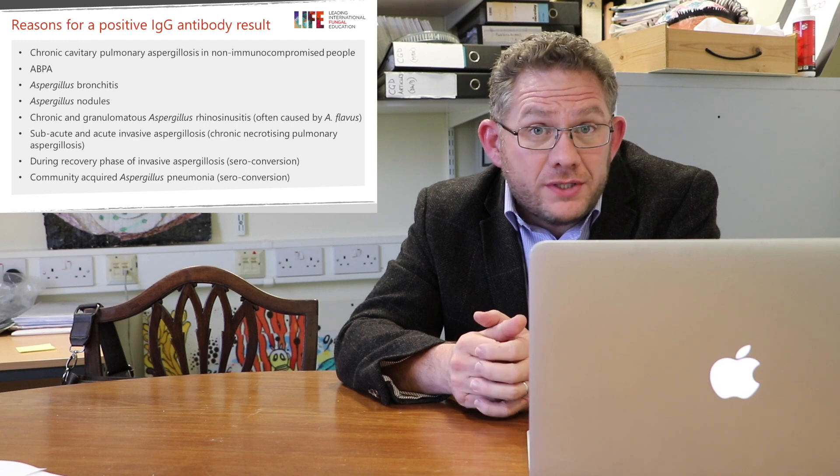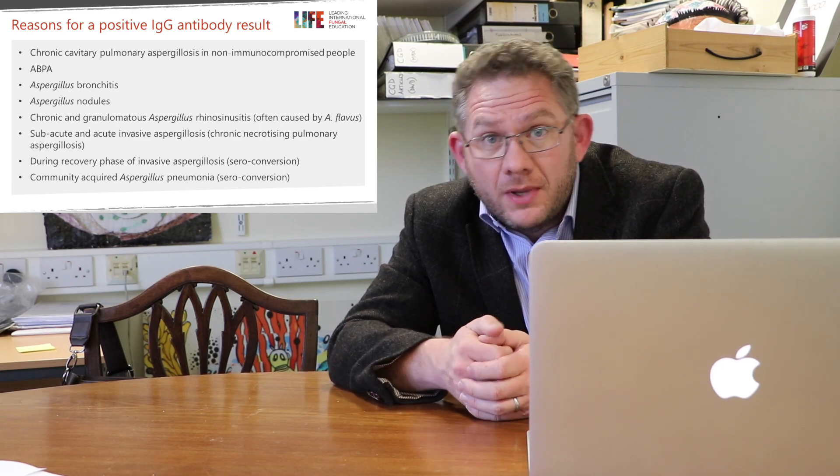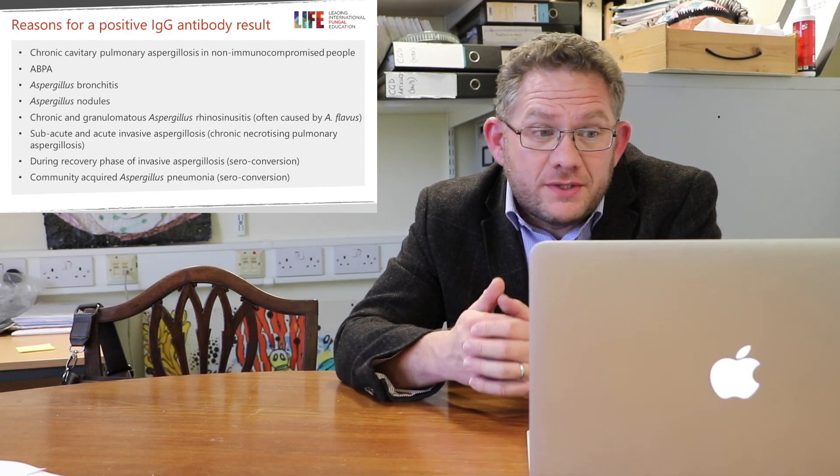Which diseases can cause a positive result? Chronic cavitary pulmonary aspergillosis is the one where aspergillus IgG testing is most frequently used and where it is an absolutely central test to diagnosis. But other forms of aspergillus disease can also have a positive test — for example, ABPA or allergic bronchopulmonary aspergillosis, aspergillus bronchitis, and aspergillus nodules. Other forms include chronic and granulomatous aspergillus rhinosinusitis, and also sub-acute and invasive aspergillosis.